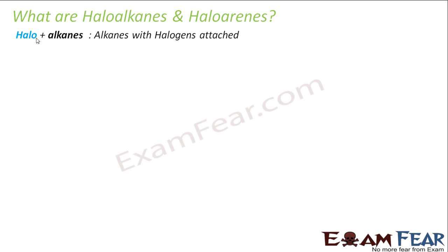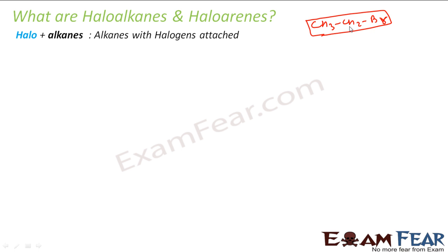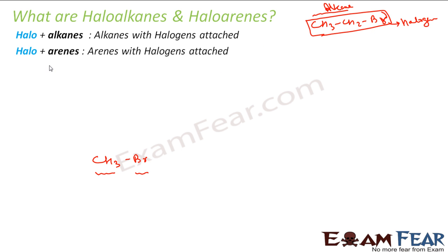So the first question is: what are haloalkanes and haloarenes? Haloalkane means halogen plus alkane. For example, CH3CH2Br is bromoethane — one bromine is the halogen and ethane is the alkane. So if you have halogen and alkane combined, that is called a haloalkane. For example, CH3Br is bromomethane. Haloarenes is halogen plus arene — for example, benzene with a chlorine added is chlorobenzene, a haloarene.